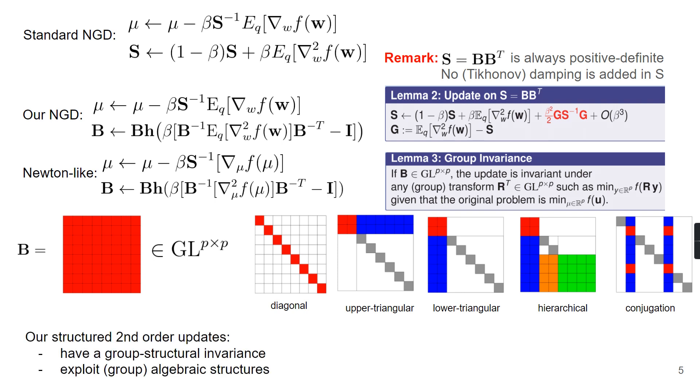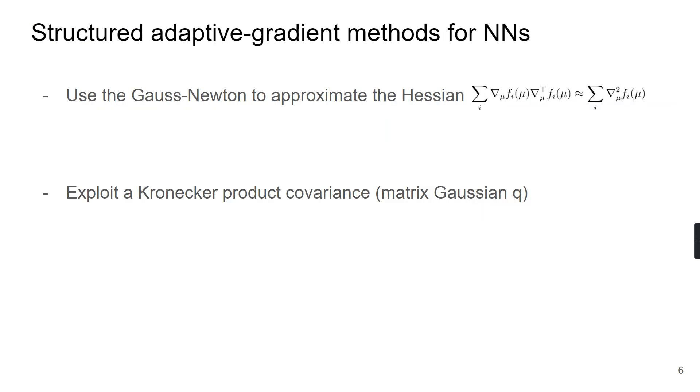Using these subgroups, we can obtain a structured second-order method. And these updates also have a group structure invariance due to the modified version of Lemma 3. By exploiting the group's algebraic structures, we can reduce the iteration cost of updates. And for the details, please see our poster.